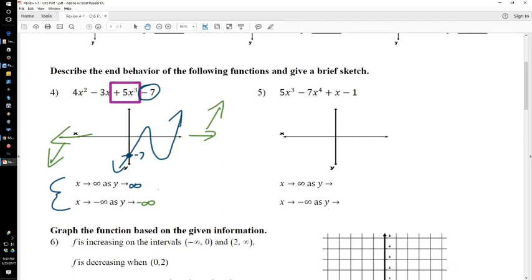Number 5, same idea. Find your leading coefficient and your degree, your highest exponent. In this case, it's 4, so it has 3 turns. And it's negative, so it comes from that direction. Find your y-intercept, negative 1. And so we need 3 turns.